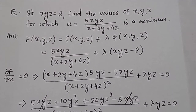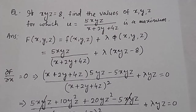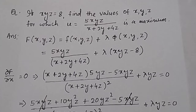If xyz equals 8, find the values of x, y, z for which u equals 5xyz divided by (x plus 2y plus 4z) is a maximum.